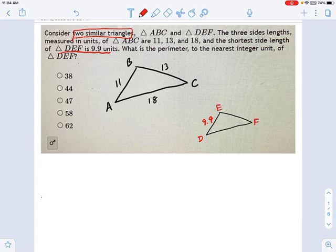Well, you can do this two ways. You could calculate what these missing sides are and then add the whole thing up. Or you could find the perimeter of the first triangle, ABC, and multiply it by a certain ratio. It doesn't matter which way you do it.